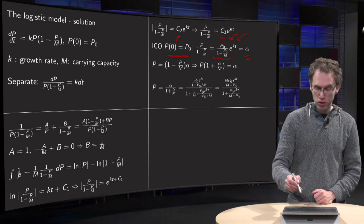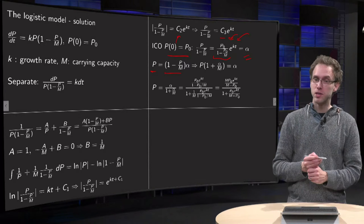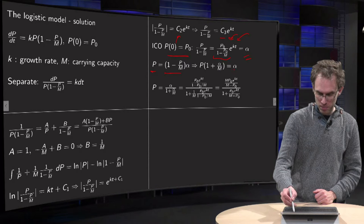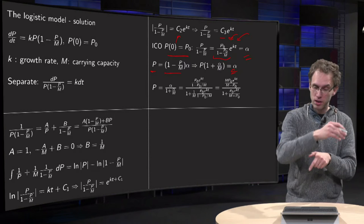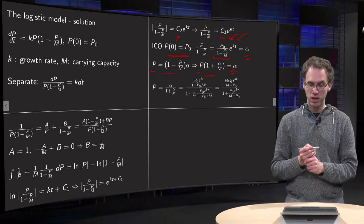So first solve for P. Well, P equals (1 minus P over M) times alpha. Then what do we have? We keep the alpha on the right hand side and put P over M times alpha to the left, so we get P times (1 plus alpha over M) equals alpha. And then we can solve P by dividing by (1 plus alpha over M), so we get P equals alpha divided by (1 plus alpha over M).